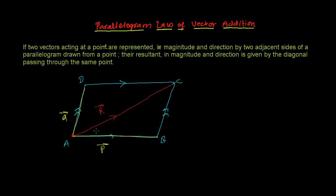This resultant R gives the sum of vector P and vector Q according to the parallelogram law of vector addition.